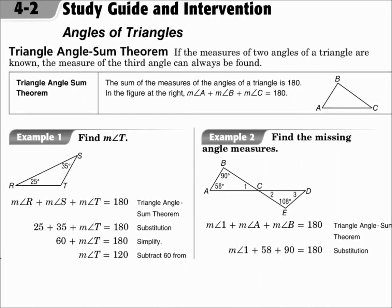This is lesson 4.2, Angles of Triangles. Your objectives are to apply the Triangle Angle Sum Theorem and to apply the Exterior Angle Theorem. The Triangle Angle Sum Theorem simply says that the three angles of a triangle add up to 180. So if you know two angles of a triangle, subtract those from 180 to get the third angle.